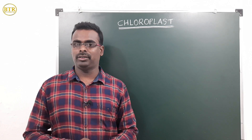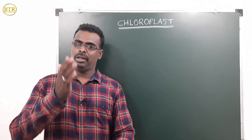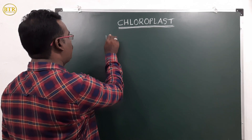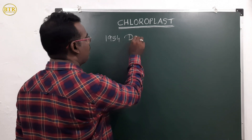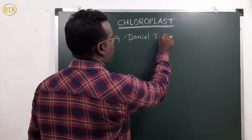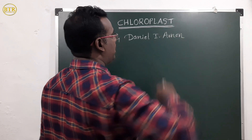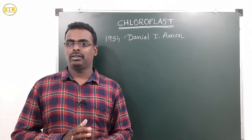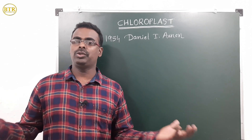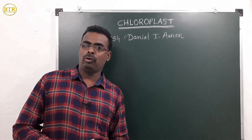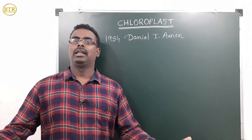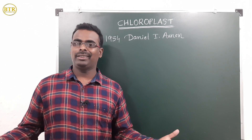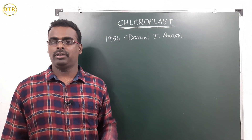Separating the chloroplast was an important task. First, they had to break down the plant cell. The first time, in 1954, Daniel Arnon gently broke open the plant cell, separated the chloroplast, and by that studied the process of photosynthesis.